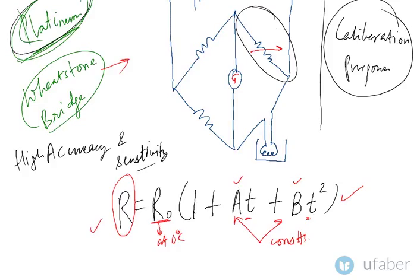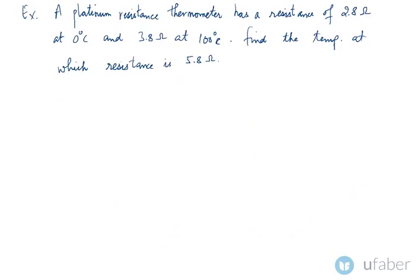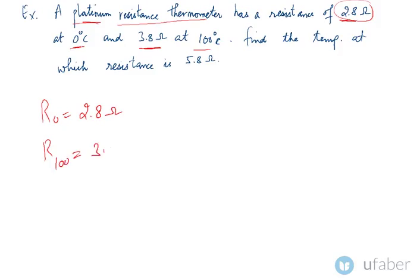Now let's look at a simple example of a resistance thermometer. A platinum resistance thermometer has a resistance of 2.8 ohms at 0°C — so R₀ = 2.8 Ω — and 3.8 ohms at 100°C — so R₁₀₀ = 3.8 Ω. We need to find the temperature at which the resistance is 5.8 ohms.